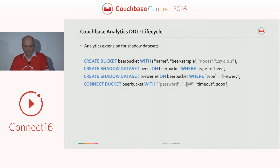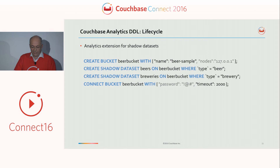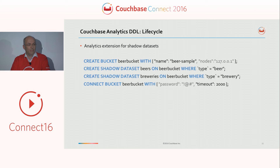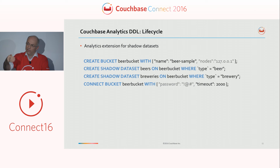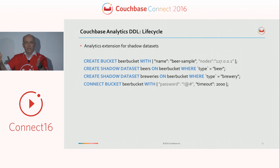When you create a shadow dataset like the beers dataset, you create that dataset on a beer bucket and can provide a filter. The filter for the first one is that the type is 'beer', so we'll have one dataset containing the beers, and another containing the breweries. After this, you've created two datasets that should contain beers and breweries. Finally, you can use the CONNECT statement to actually connect this bucket to Couchbase Server, to the data nodes. Then replication will start — you'll first get all the existing data, and then all further changes will be continuously replicated to the system, so you can immediately query the data.